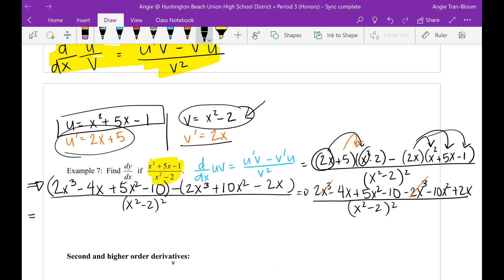This will leave me to think that I have a negative 10x squared and a positive 5x squared, so that's going to be a negative 5x squared left. Then I have negative 4x and a positive 2x, so now I am going to end up with negative 2x. Then bring down my minus 10 all over x squared minus 2 squared.